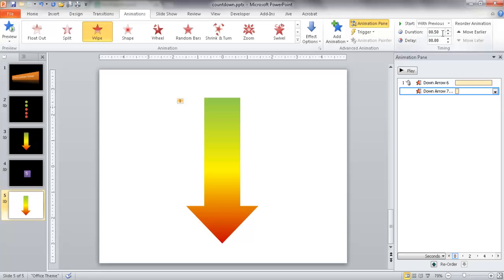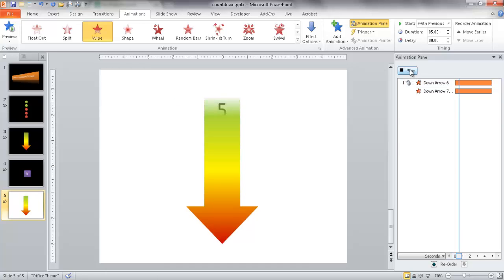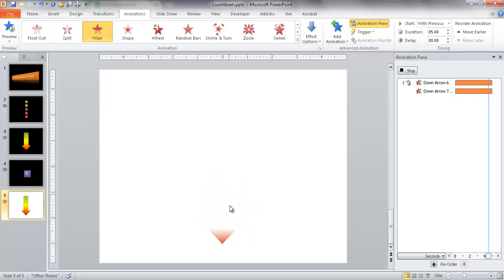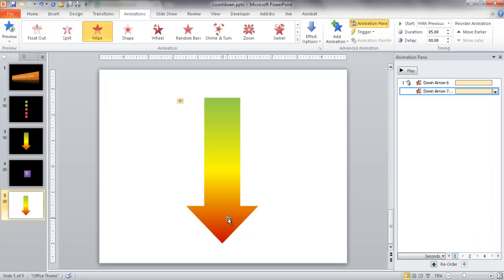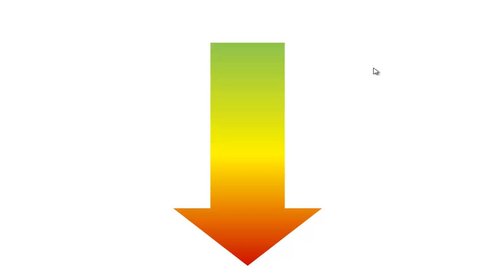I'll set that second animation to 5 seconds as well. Once I click Play, as the 5 seconds go by it shows five, four, three, two, one — both animations running simultaneously, creating the countdown effect. In slideshow view, once I click the mouse it goes five, four, three, two, one, right to the bottom and disappears. That's how we do it with the arrow.